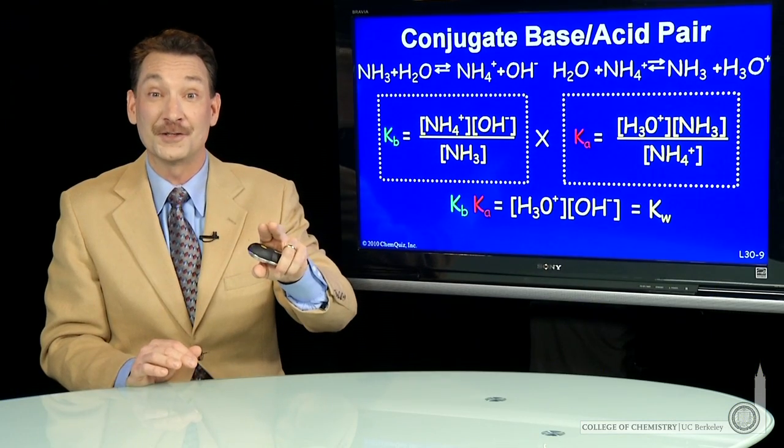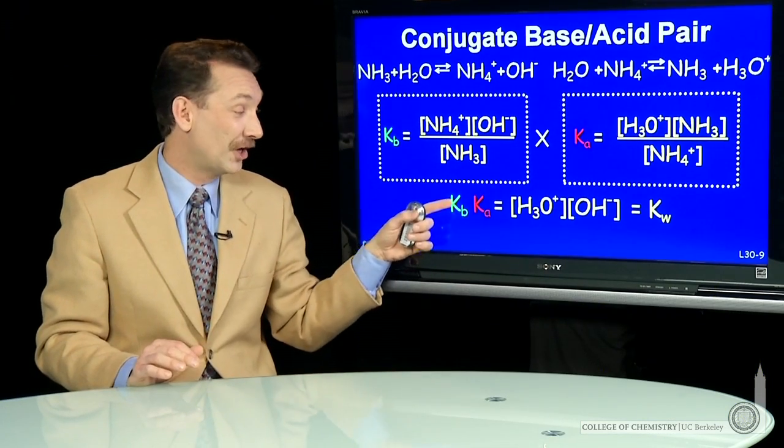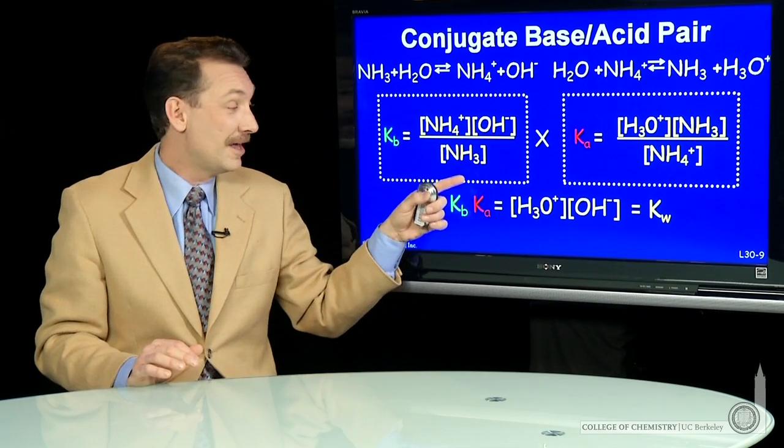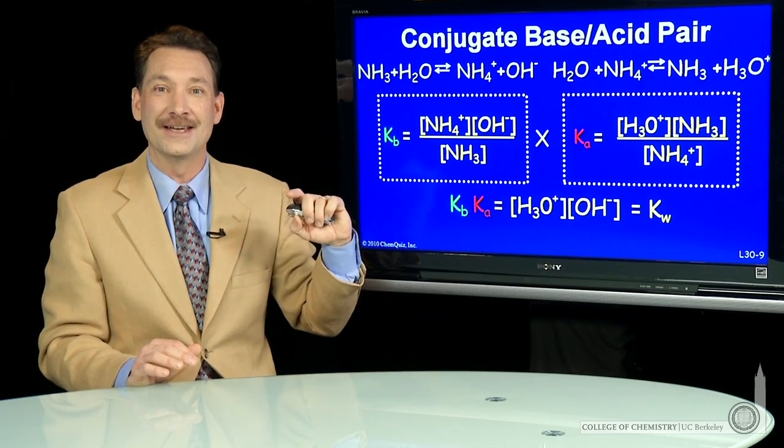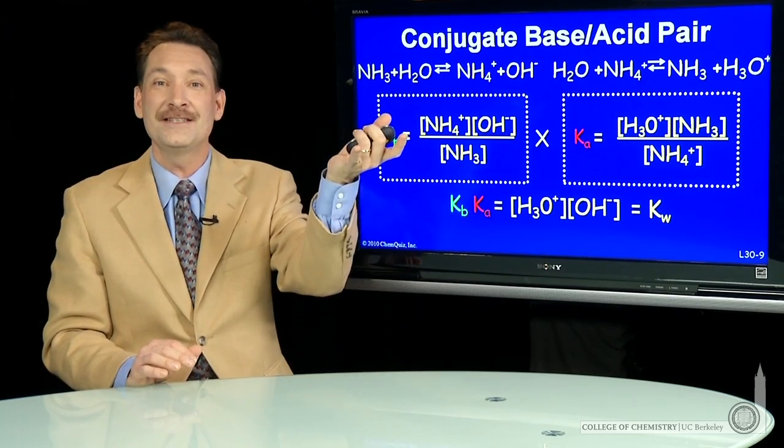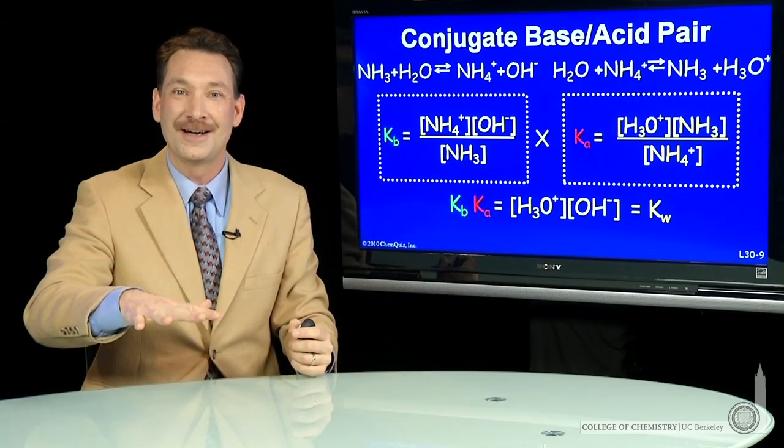So here we have an analytical expression that tells us the larger Kb, the smaller Ka. A strong conjugate base leads to a weaker conjugate acid.